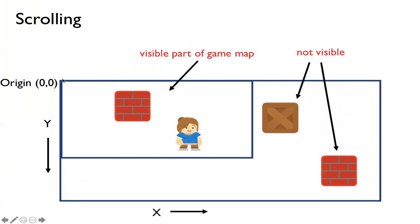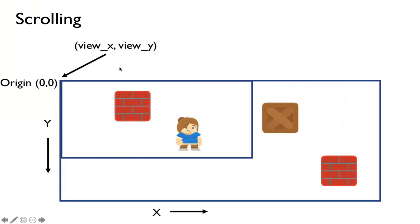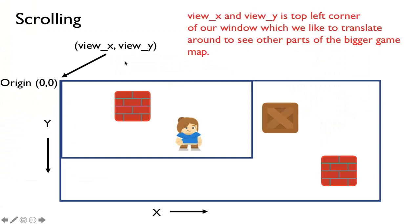The origin at 0,0 is the top-left corner — that's the origin of the entire game. We're also going to create a couple of variables called view_x and view_y that will represent the top-left corner of the window, which is the visible part of the screen. So what is view_x, view_y? It's basically the top-left corner of our window. If I move view_x and view_y, then we can see the other parts of the game.